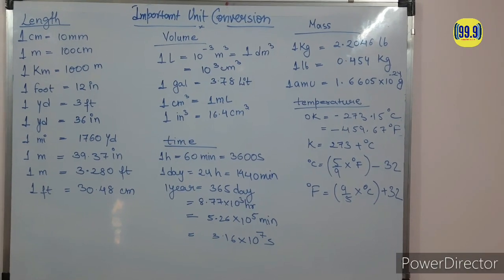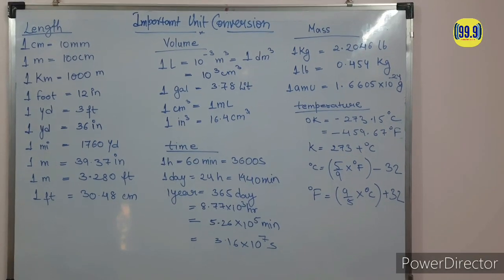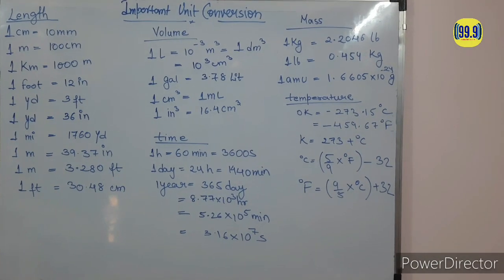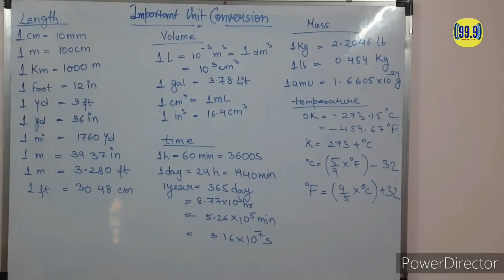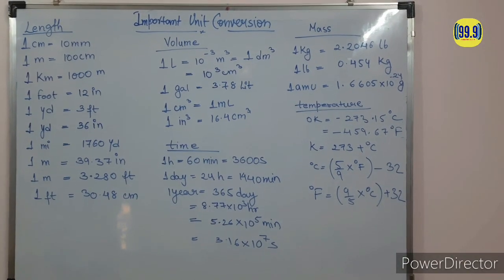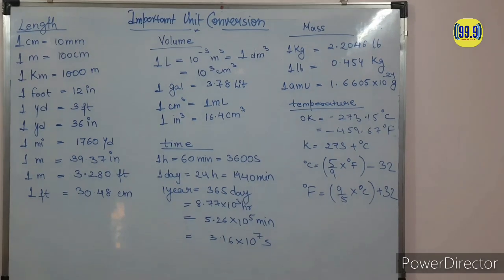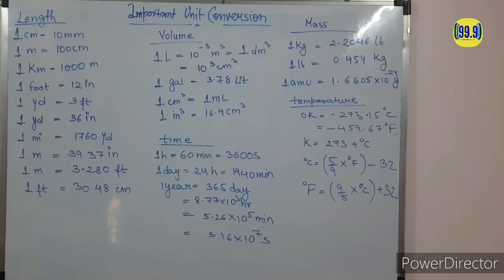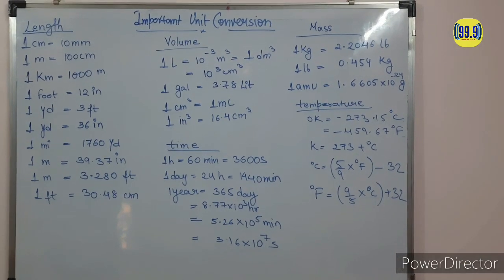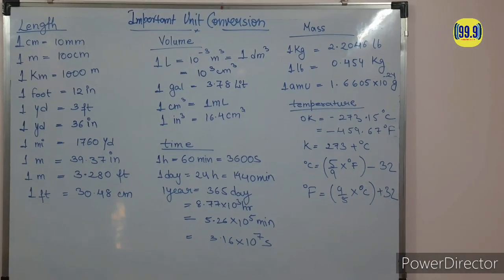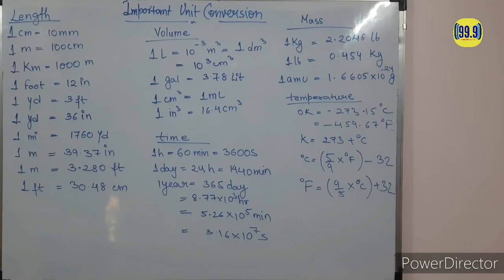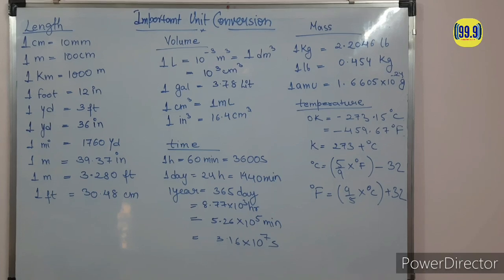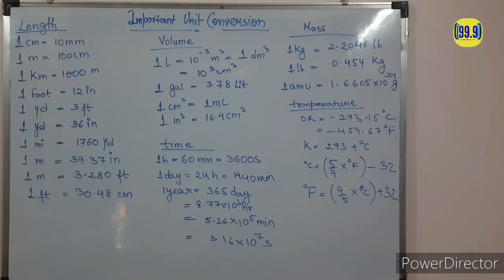For temperature: to convert Celsius into Kelvin, simply add 273 to the value in degree Celsius. To get degree Celsius from Fahrenheit, multiply by 5/9 and subtract 32. To get degree Fahrenheit from degree Celsius, multiply degree Celsius by 9/5 and add 32. So this covers length, volume, time, mass, and temperature units.